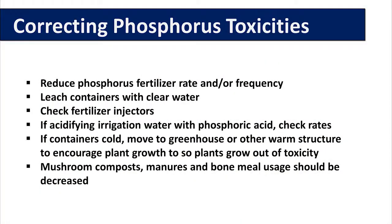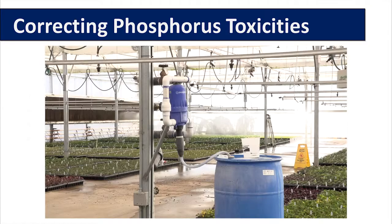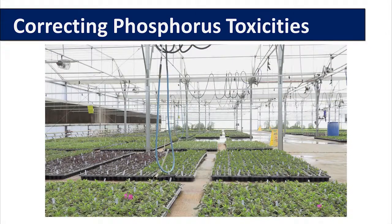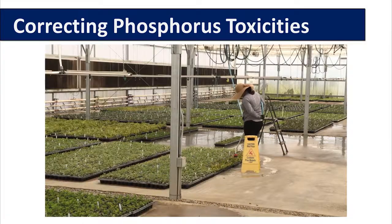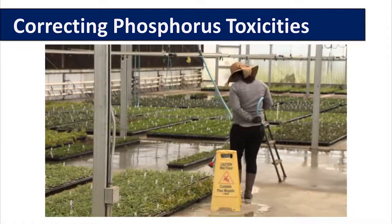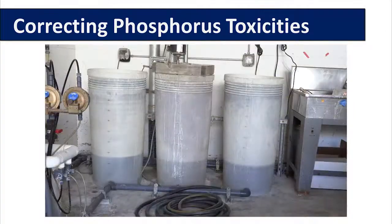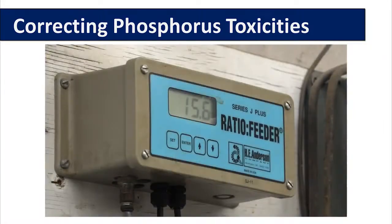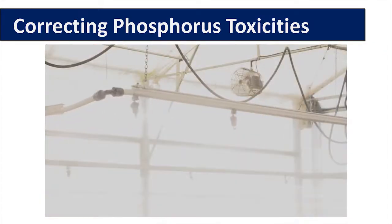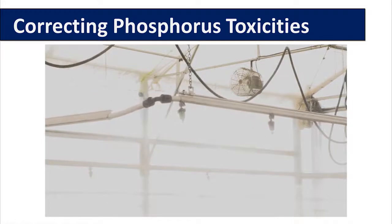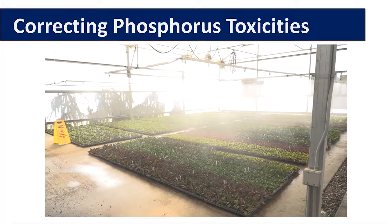To correct phosphorus toxicity symptoms — which is a little more challenging — first make sure the phosphorus in the fertilizer is not too high. If you are applying phosphorus through fertigation, reduce the amount in the fertigation program. If phosphorus is already in the media, leach the containers one to three times until the electrical conductivity of the leachate coming out of the containers decreases, and repeat until the symptoms begin to disappear. Check the fertilizer injectors to make sure they are functioning properly. If you are acidifying your irrigation water with phosphoric acid to reduce alkalinity, check your fertility program to make sure you are not getting excess phosphorus from this acidification process.